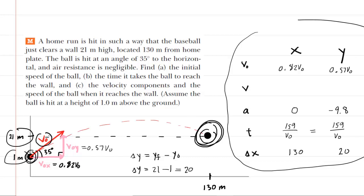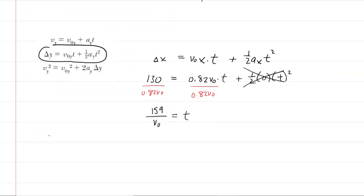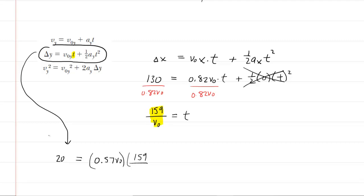Now we apply the same kinematic equation in the y-direction. Delta-y was 20 meters, equals V-initial-y times t plus one-half times acceleration-y times t-squared. Substituting: 20 equals 0.57 V-naught multiplied by the time expression 159 over V-naught, plus one-half times negative 9.8, times the quantity 159 over V-naught squared. Notice the V-naughts cancel out in the first term — that's the key simplification.